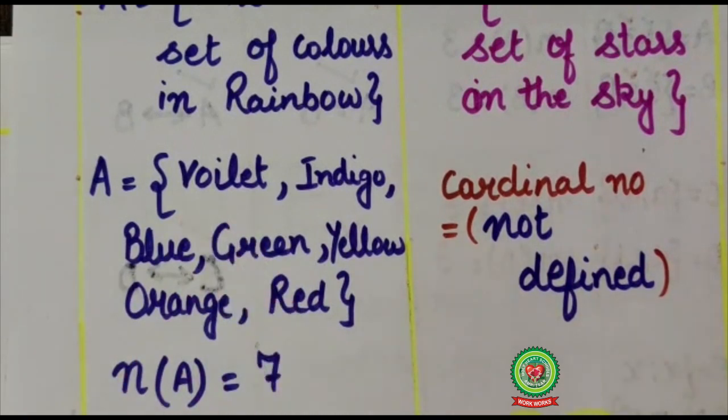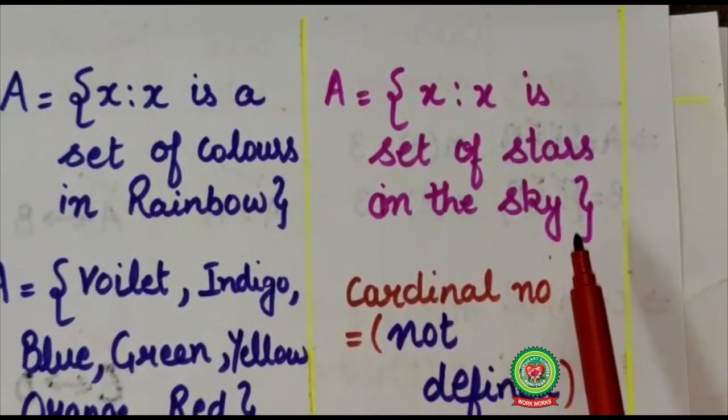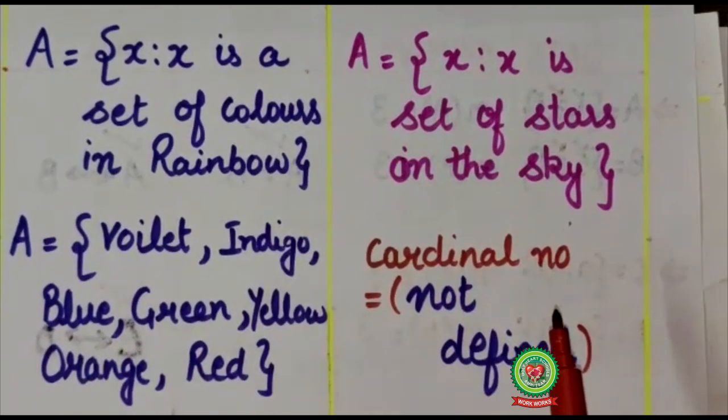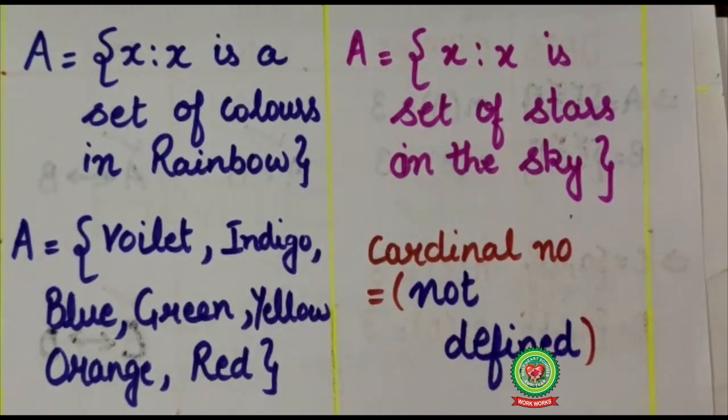Here it indicates that there are limited elements and having fixed cardinal number. On the other hand, we are having a set which we cannot list or count. So here cardinal number is also not defined. Therefore, this is a countable set and this is a not countable set. This is our today topic, that is finite set and infinite set.